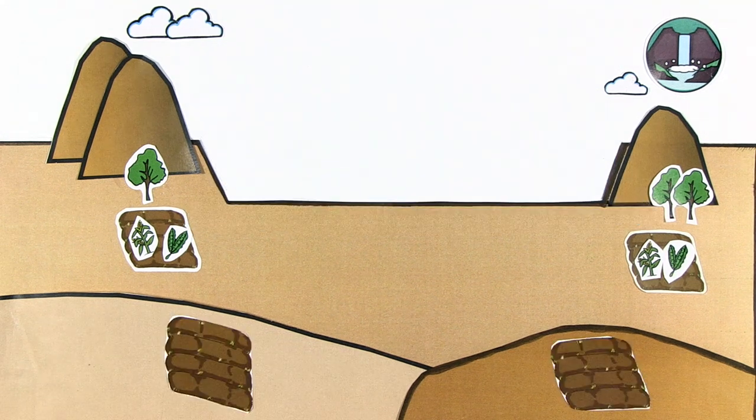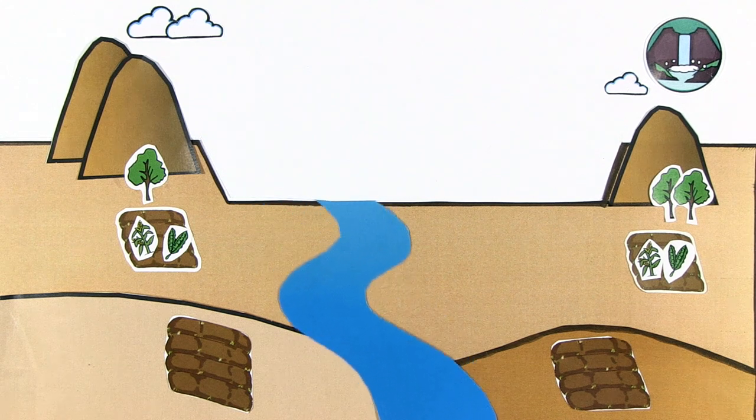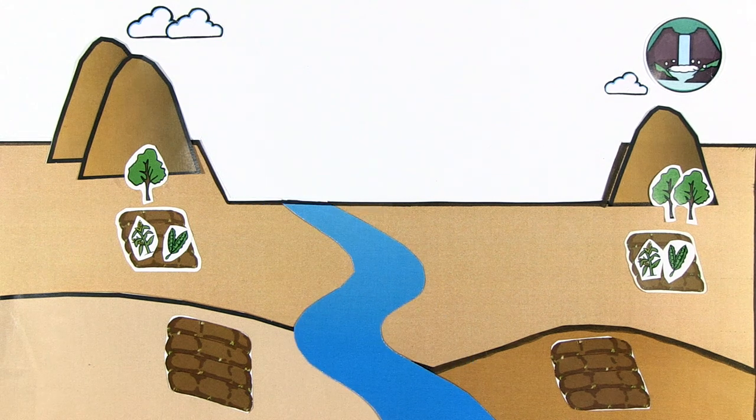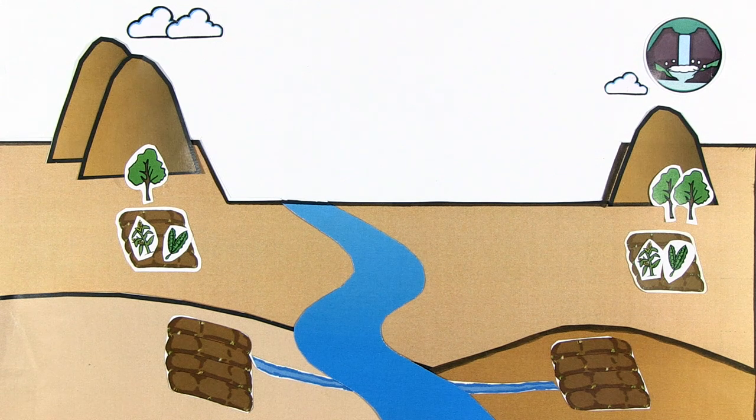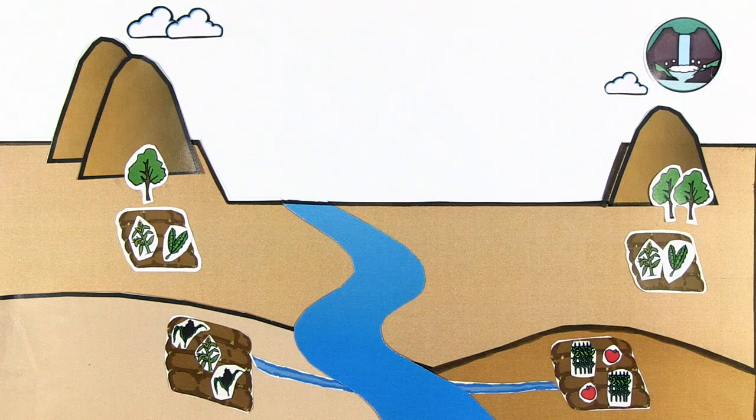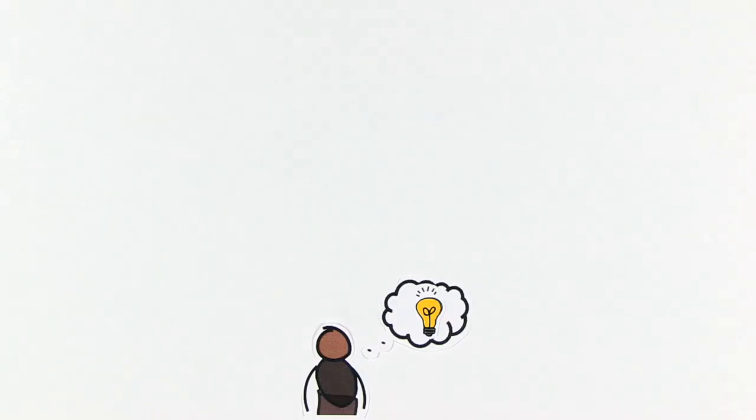Off-Wadi systems apply the harvested rainwater outside the Wadi bed. In these systems, structures divert the rainwater from its natural pathway into a close-by area suitable for agriculture.